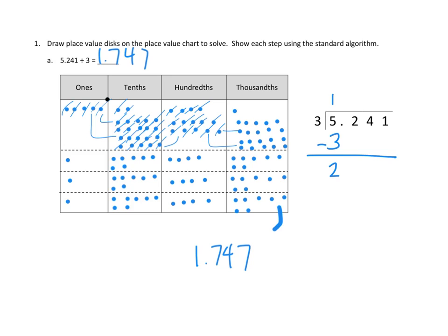Now, what we're really doing is not just 'pulling down the two' — we're saying we can no longer divide these ones. So we're going to need to make tenths. We have 20 tenths from decomposing those two ones, and we have two more tenths here, so the next number we divide is 22 tenths. Dividing 22 tenths into three equal groups, we can give each group seven tenths. Three groups of seven uses up 21 of our tenths, so we subtract: 22 minus 21 leaves us with one tenth.